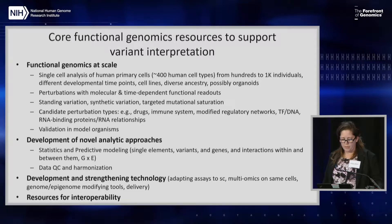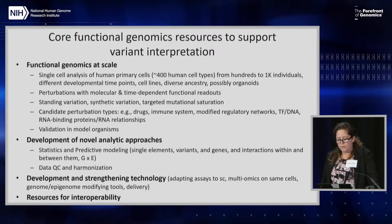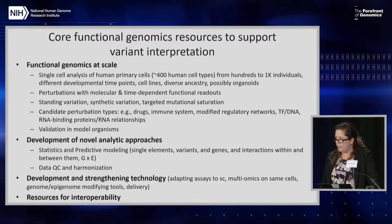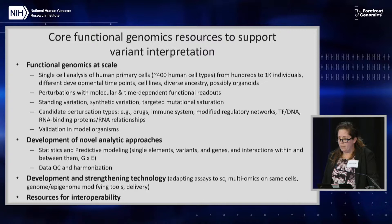I've covered these in four pieces. The first is functional genomics at scale. We've talked about single-cell analysis of human primary cells, perhaps around 400 human cell types from hundreds to even 1,000 individuals. GTEx has informed us quite a bit about sample size and the discovery that comes with it. We've discussed sampling different developmental and prenatal time points in particular, the value of cell lines, considering diverse ancestry as we make these collections, and organoids — with their pros and cons.